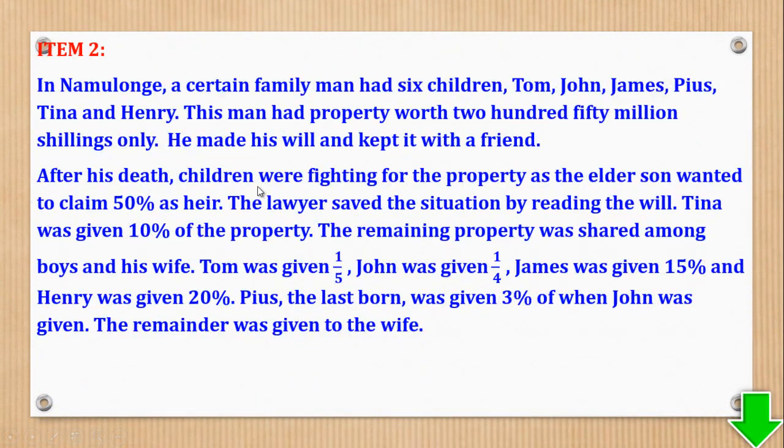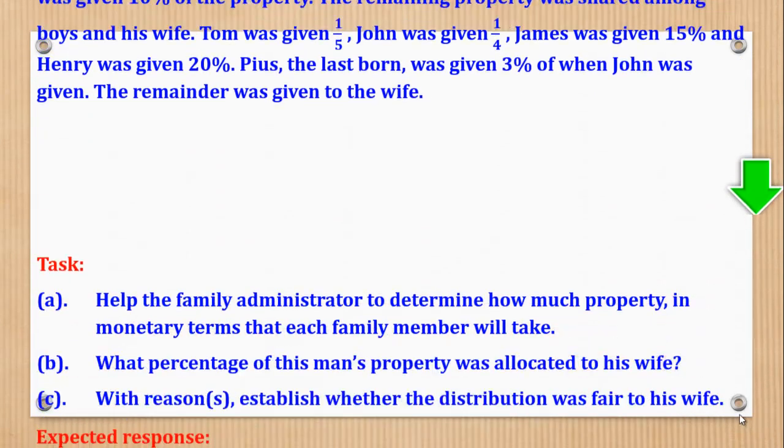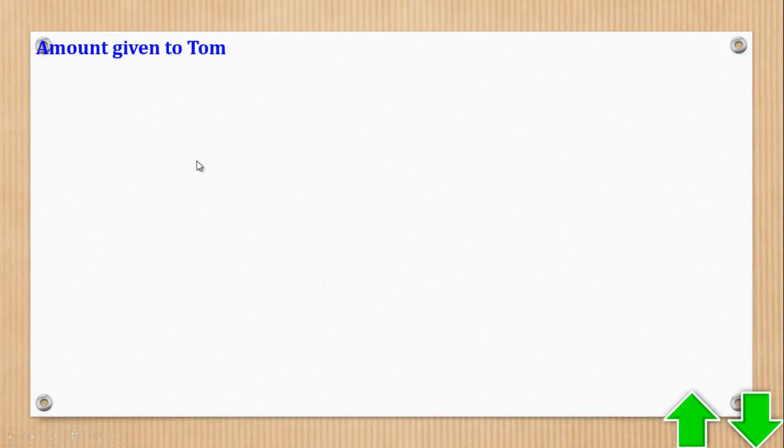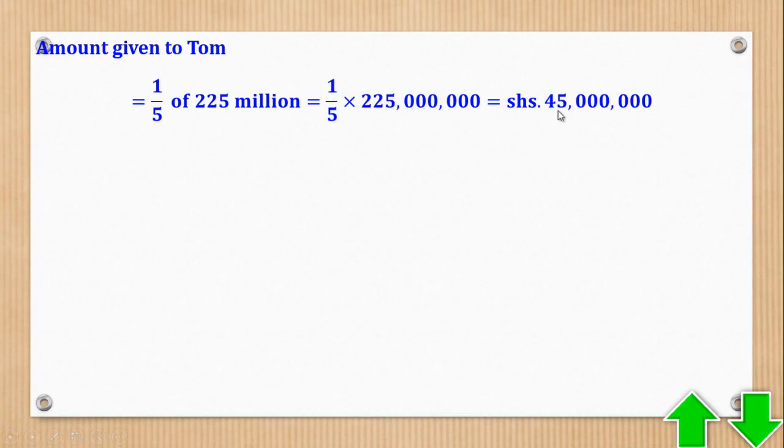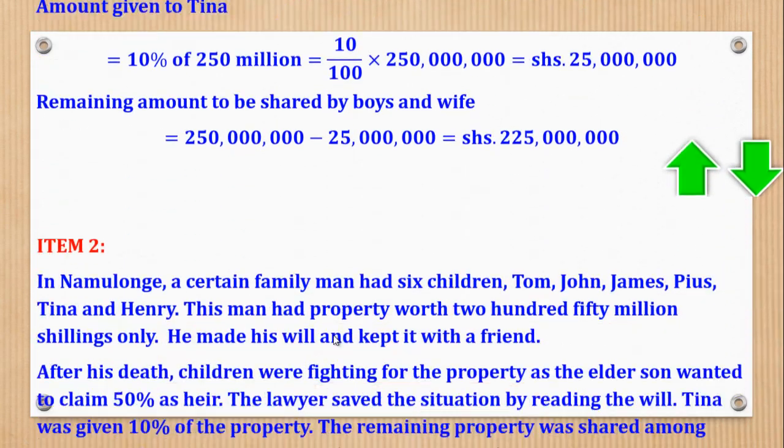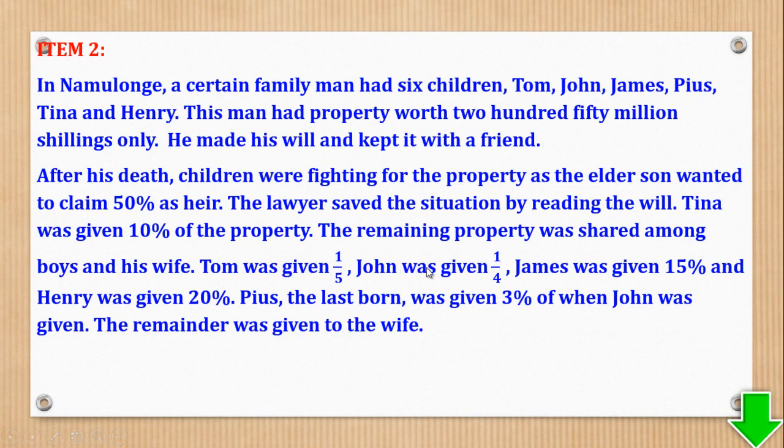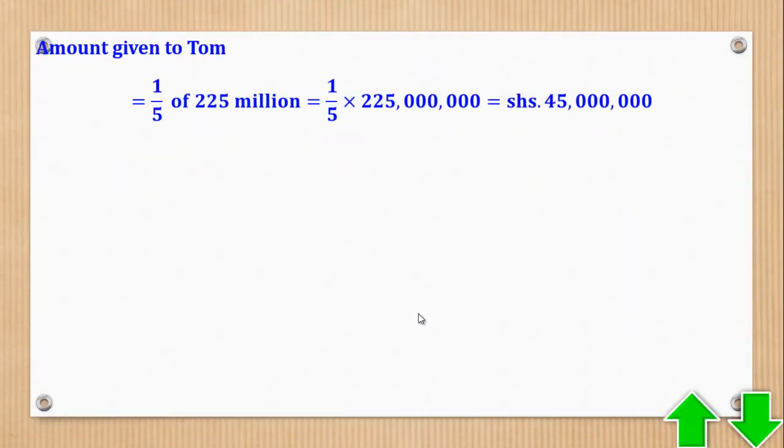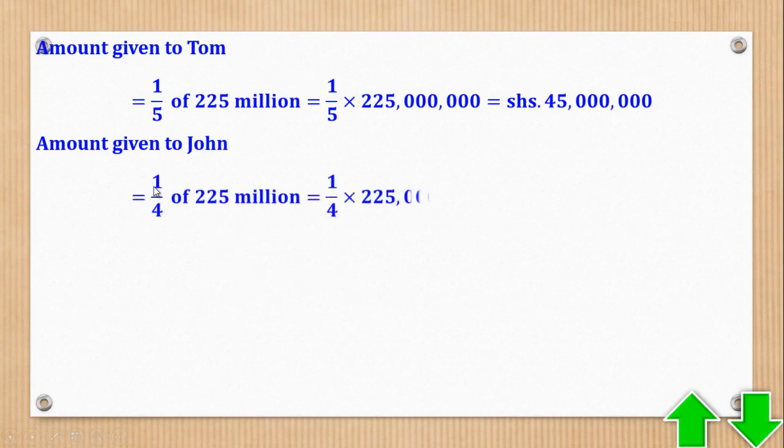Then they told us, after that, the remaining property, Tom was given a fifth. So amount given to Tom will be 1 over 5 of the 225 million, which is 1 over 5 times 225 to give you 45 million. That was Tom. Then next, from Tom we go to John. John was given a quarter. So we'll come and get a quarter of the remaining property, which is a quarter of the 225 million, which gives you 56 million 250 thousand shillings.